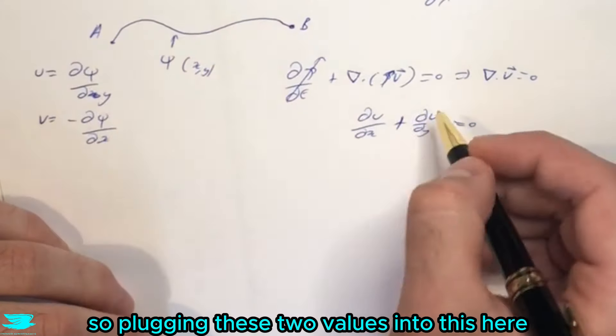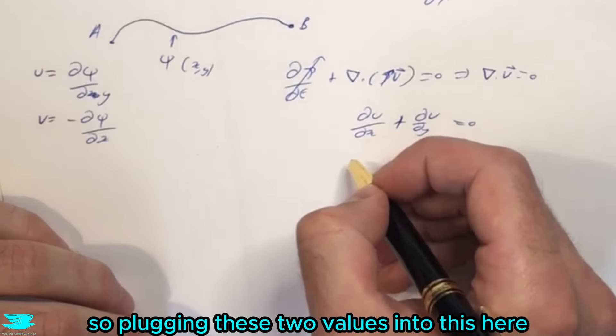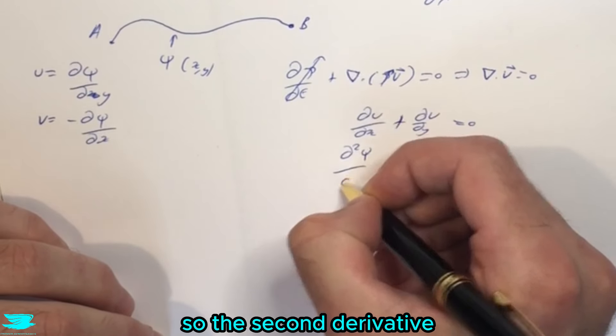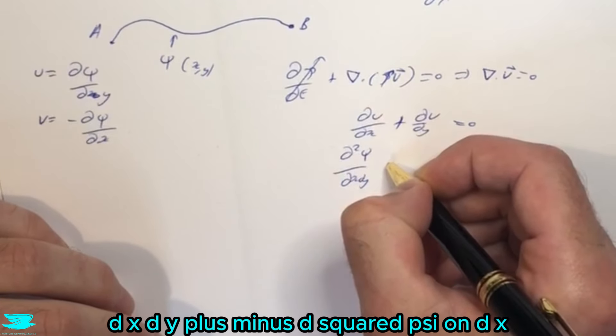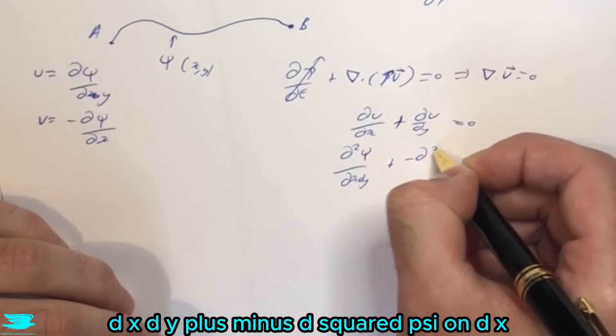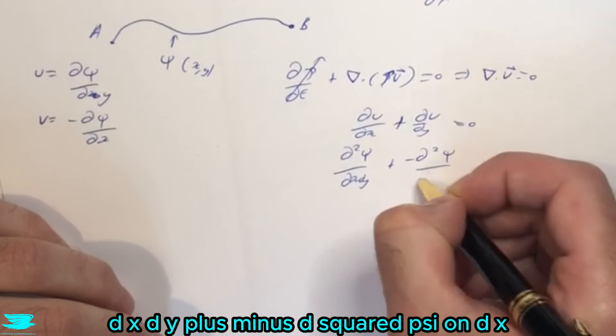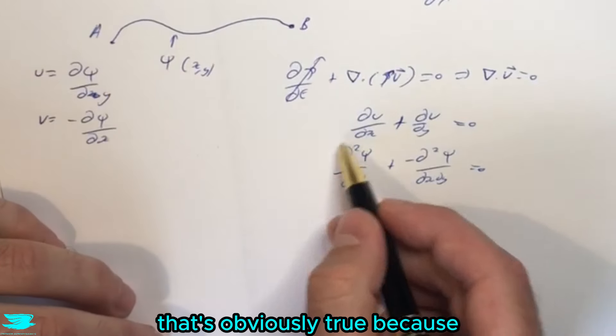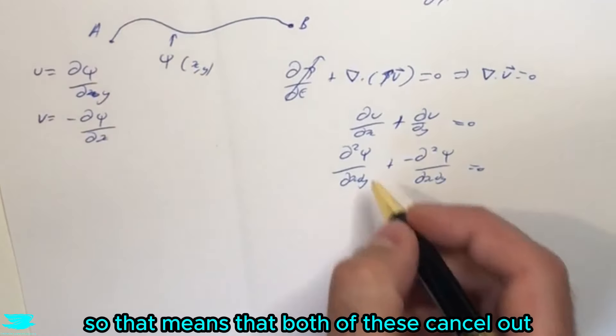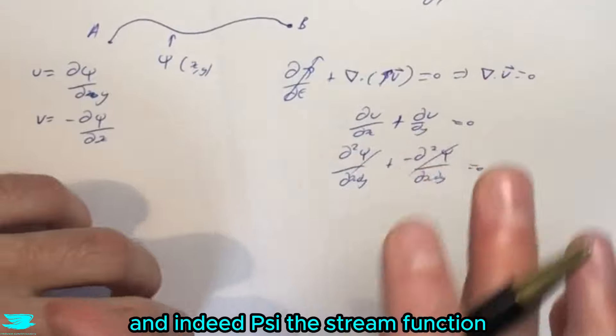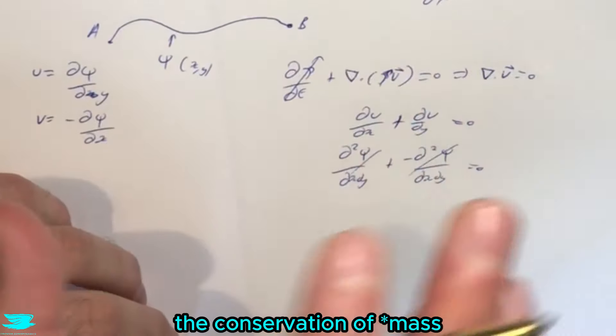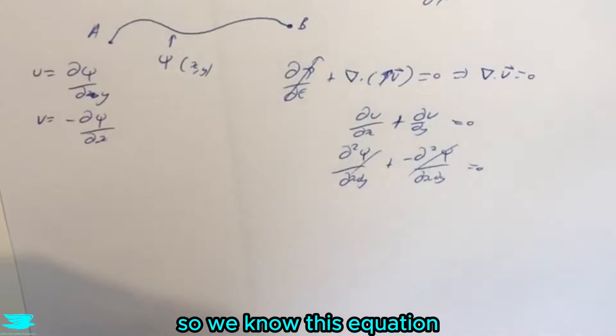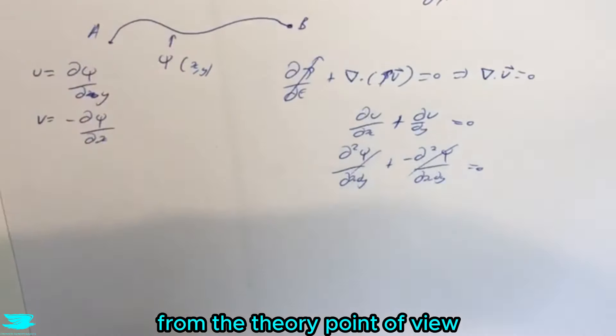So plugging these two values into this here, we'll then get d squared psi on dx dy plus minus d squared psi on dx dy equals zero. Well that's obviously true because this is equal to this, so that means that both of these cancel out. And indeed psi, the stream function, does satisfy the conservation of mass. So that's great. So we know that this equation does make sense from that theoretical point of view.